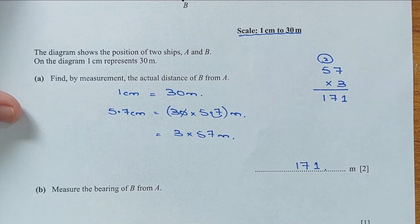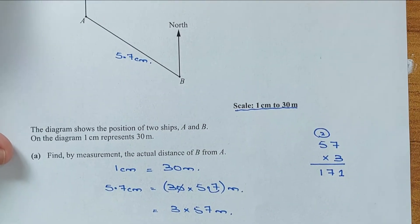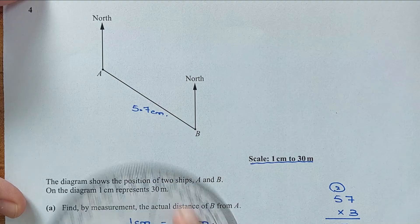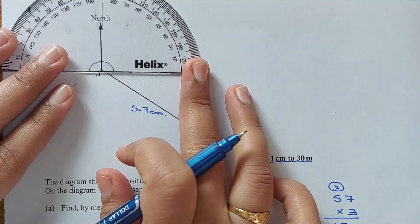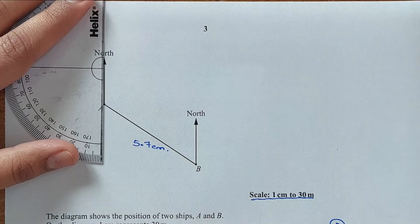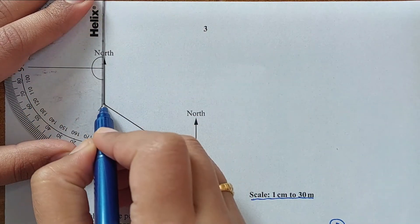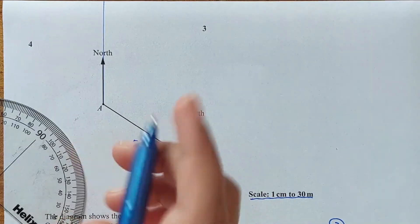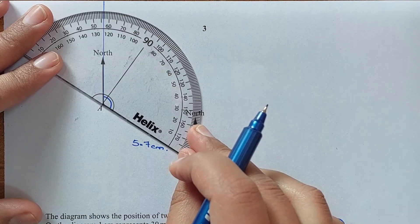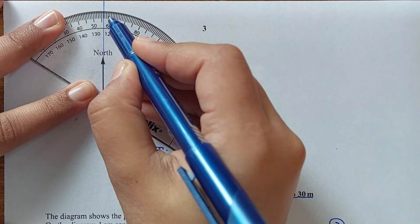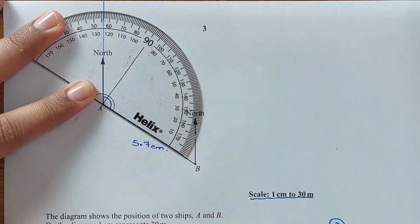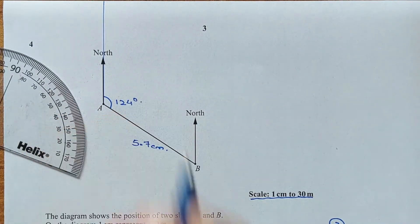Now for part B, measure the bearing of B from A. We have to measure the bearing of B from point A using the protractor. Let me extend the north line and measure this angle. The bearing is 124 degrees.